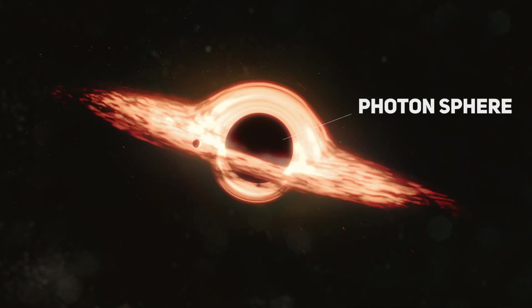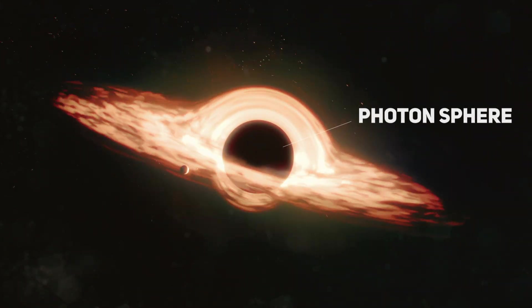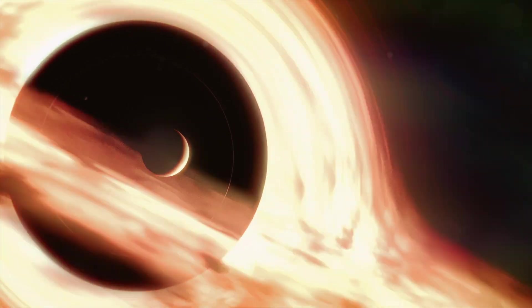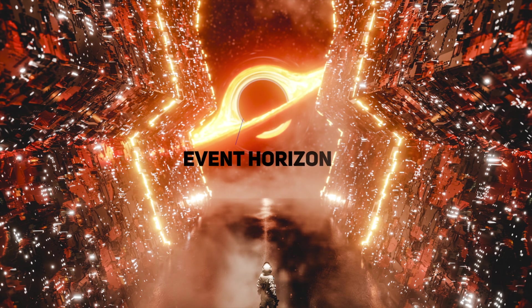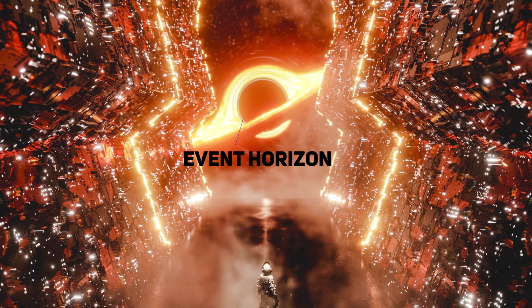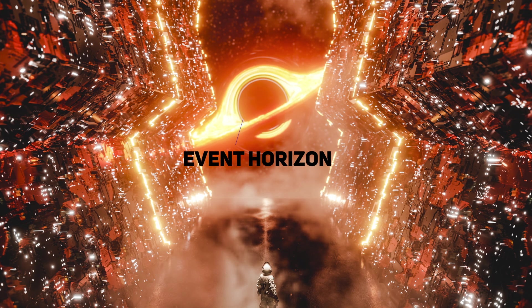The photon sphere is an area where gravity is so dreadful that photons are forced to travel in orbits without a chance to escape the black hole. The event horizon is the point of no return, a boundary beyond which any object or information is forever trapped by the devastating gravitational pull of the black hole.